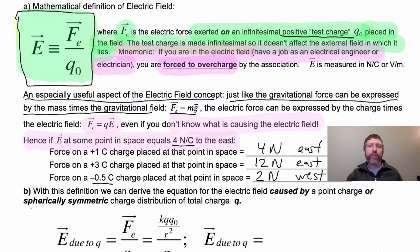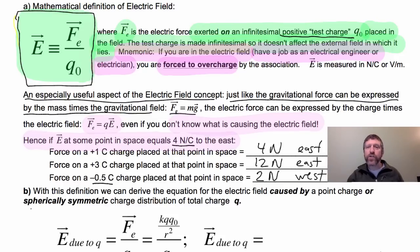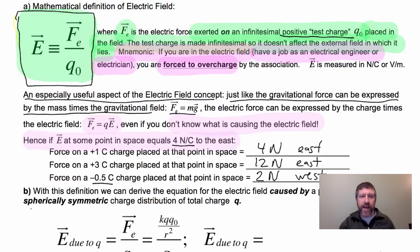You can even think of the field as how much force would be on a 1 coulomb test charge. The problem is 1 coulomb is a huge amount of charge, so we really use an infinitesimally small test charge. But the field is how much force per coulomb would be on a charge placed inside that field.